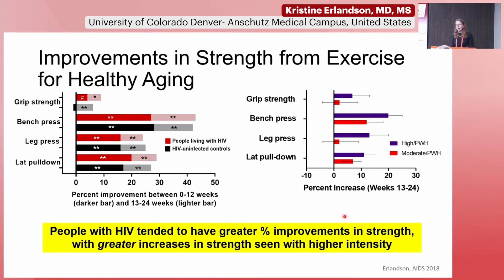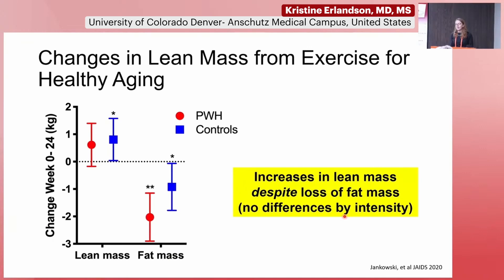We then looked at specific measures of muscle strength — grip strength, bench press, leg press, and lateral pull-down. We saw very nice improvements of anywhere between about 10% to 40% in muscle strength, tending to be a little bit higher in those with HIV. When we compared high intensity versus moderate intensity, almost everyone had greater improvements if randomized to the high-intensity arm, really emphasizing the importance of high-intensity exercise to improve muscle strength in people with HIV.